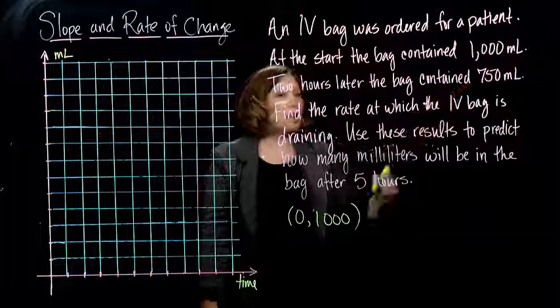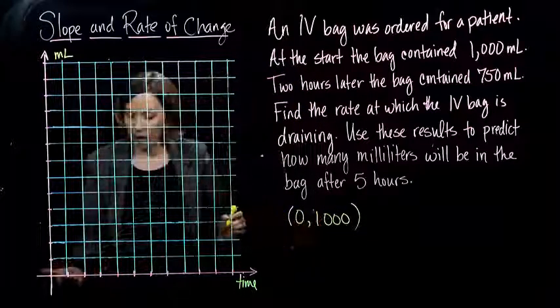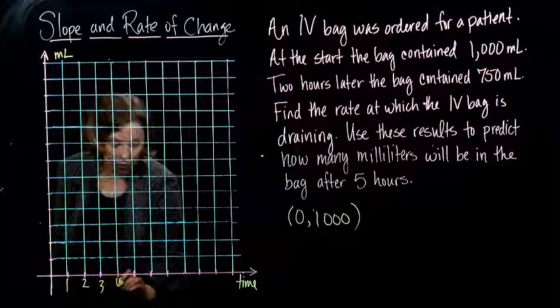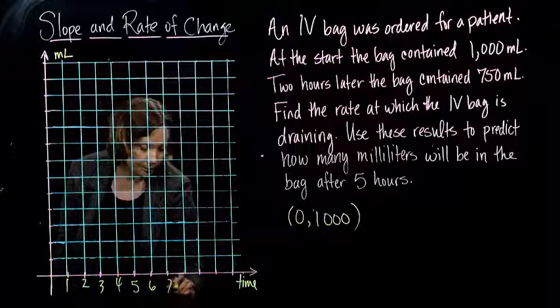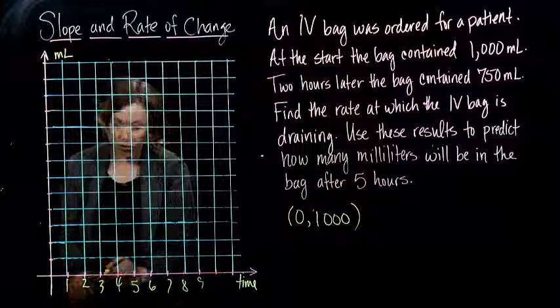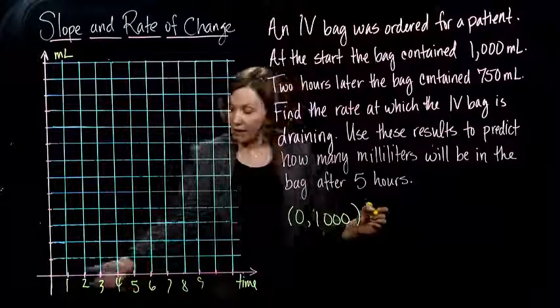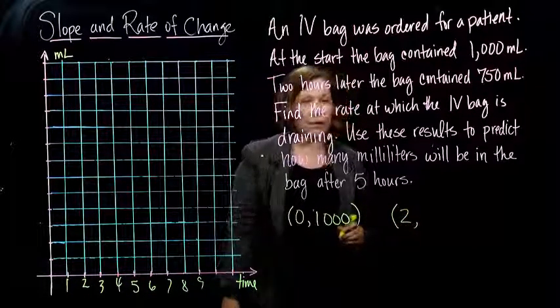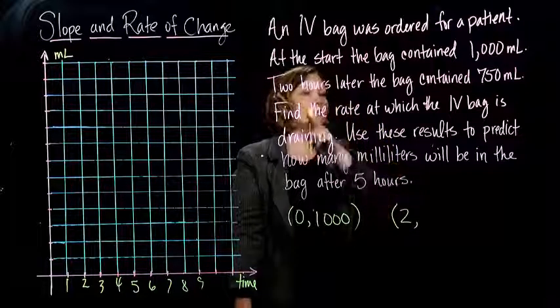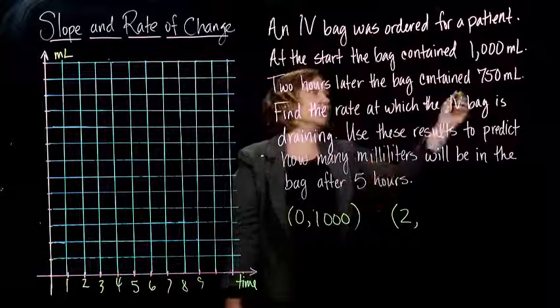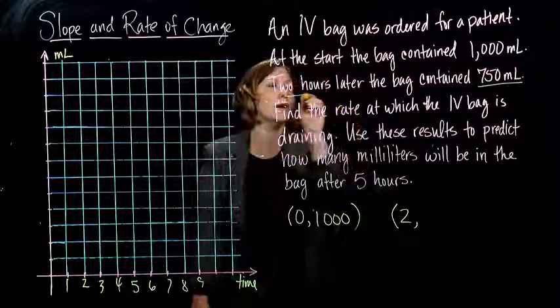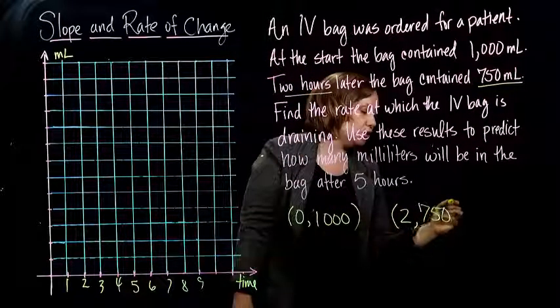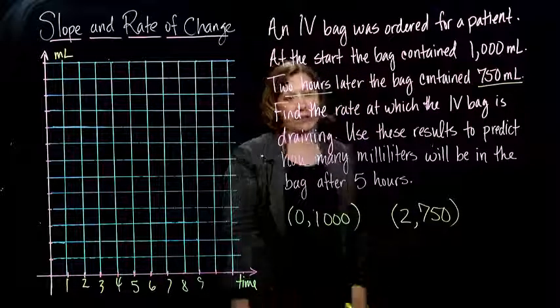And then two hours later, so if we are plotting in terms of hours, full hours, so two hours later, so that means what's on our vertical axis, our time, is two hours, we have 750 milliliters in the bag. So after two hours, that means our next point on the graph would be (2, 750) if we were to graph this.